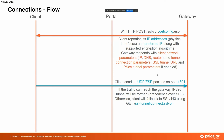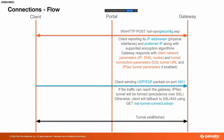If you have enabled IPsec, GlobalProtect will always try IPsec first on UDP 4501. If it cannot establish IPsec over 4501, it will fall back to 443. If you did not enable IPsec, GlobalProtect will immediately use 443 to negotiate the tunnel. After that, there is a get SSL tunnel connect SSL VPN message, and then the tunnel is now established.